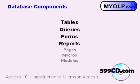Microsoft Access specifically has seven different major database components: tables, queries, forms, reports, pages, macros, and modules. The first four — tables, queries, forms, and reports — are what we're going to work with today. The other three — pages, macros, and modules — are a little more advanced, and we're going to save those for a future class.